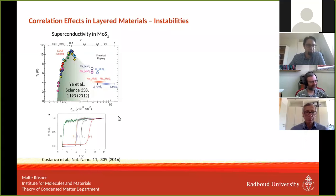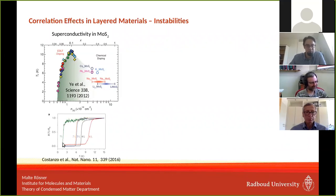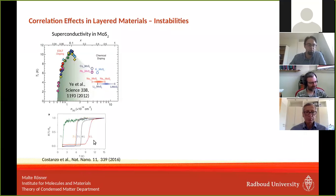One interesting point pops up: the dependence of this TC as a function of the involved layer count. For just a monolayer, TC is rather low, and then increasing the number of layers, TC changes — meaning the exact geometry and the surrounding affects these many-body instabilities.